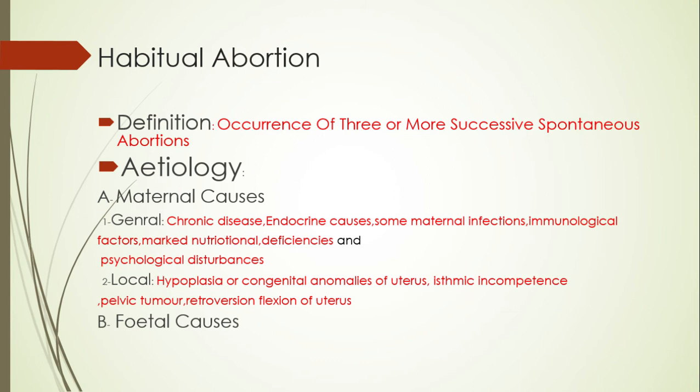The second most important term is habitual abortion. Habitual means that abortion occurs as a habit. The definition of habitual abortion is the occurrence of three or more successive spontaneous abortions. They must be spontaneous abortions.